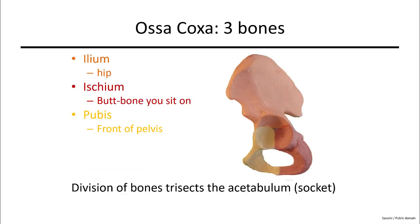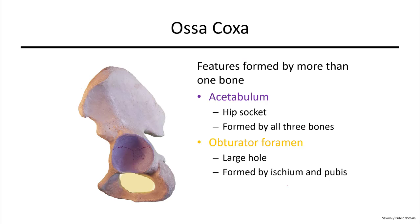The three bones of the os coxae are the ilium — the upper fan portion — the ischium — the posterior portion you sit on — and the pubis — the front part of your pelvis. All three come together to form the acetabulum. Another common feature is the obturator foramen, the large hole formed by the ischium and the pubis.